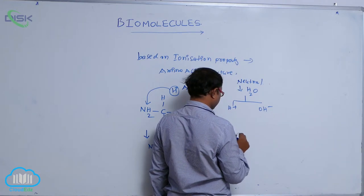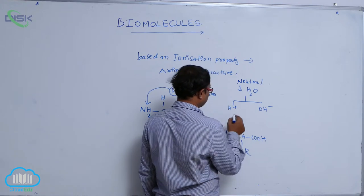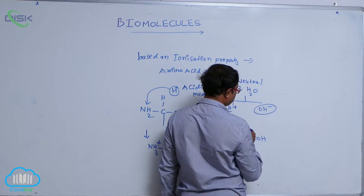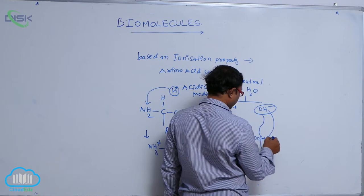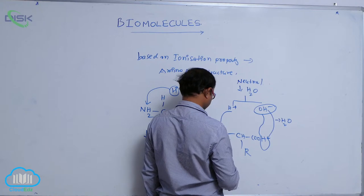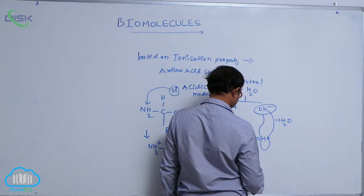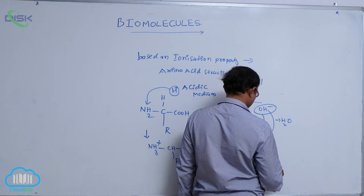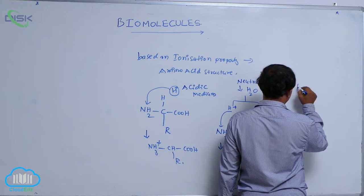In neutral media — that is, in water — water dissociates into H+ and OH-. The H+ is added to NH2, converting it to NH3+. The OH- reacts with the hydrogen of the carboxyl group, releasing water. By the resulting structure, we get NH3+ — CHR — COO-.